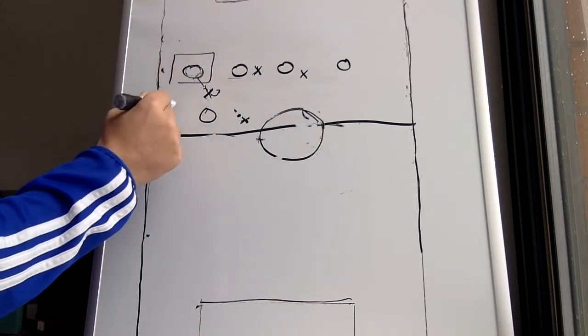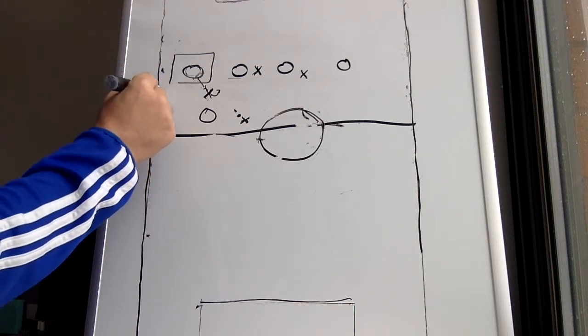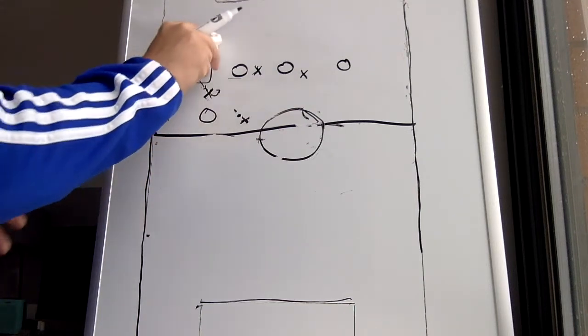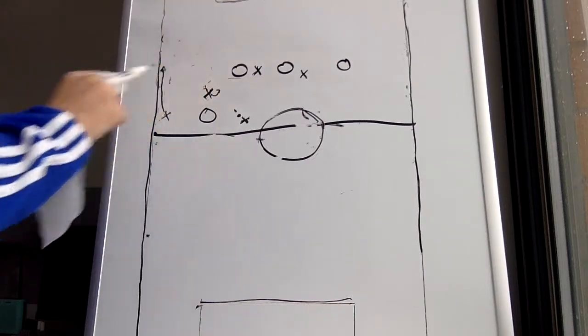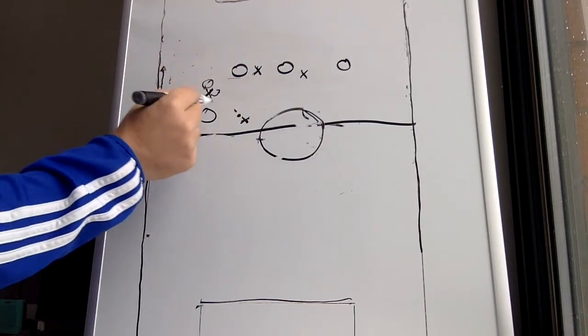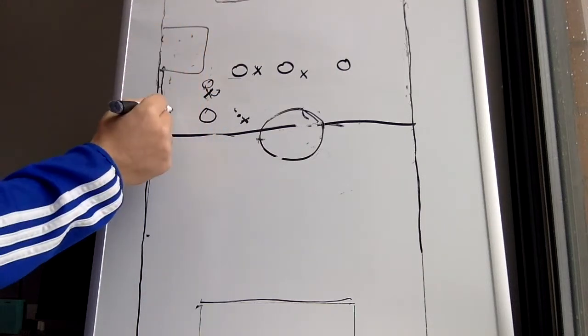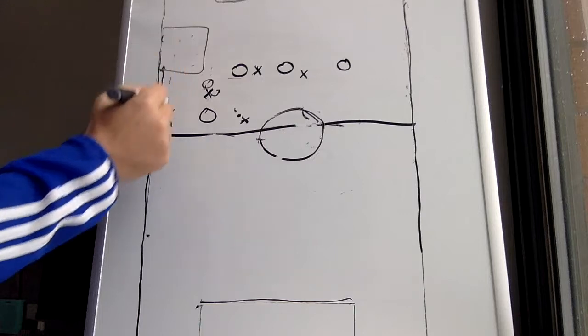Now, the way that you exploit this is have your wing back come down. So, if the defender now says, okay, I'm going to go with the winger and commits inside to the winger, this is going to leave all this space in behind for the wing back to come in.